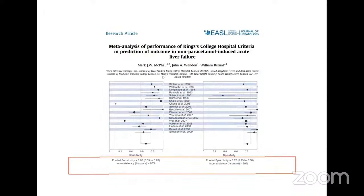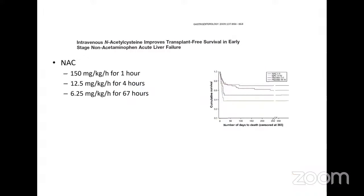Regarding N-acetylcysteine (NAC) dosing: 150 mg/kg over one hour, then 12.5 mg/kg/hour for four hours, then 6.25 mg/kg/hour for the next 67 hours.